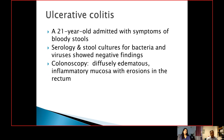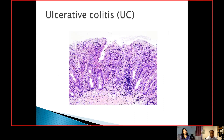The next patient is a 21-year-old admitted with symptoms of bloody stools. Serology and stool cultures excluded any bacterial and viral etiology. Colonoscopy showed diffusely edematous and inflammatory mucosa with erosions in the rectum. Ulcerative colitis involves the distal part of the large bowel. On H&E, what you see is surface mucosal ulceration with diffuse inflammation along the lamina propria. Unlike Crohn's disease with patchy inflammation, in ulcerative colitis you see diffuse inflammation. Unlike Crohn's disease, here you see more chronicity of the crypt architecture — there will be branching and significant distortion.